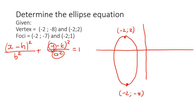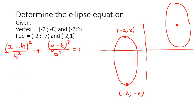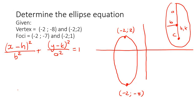A is always the bigger one. So if it's a vertical ellipse, a goes with y; if it's horizontal, a goes with x. The center is always h and k; the longer length is a, the shorter length is b, and the foci distance is c. To find the center, the x values don't change — both vertices have x equal to negative 2, so h equals negative 2.